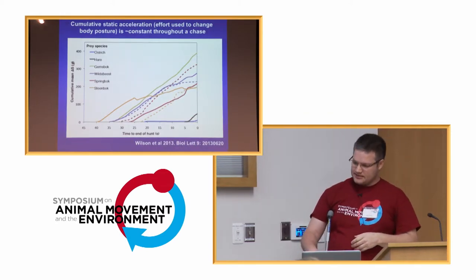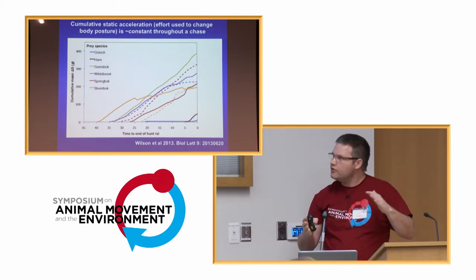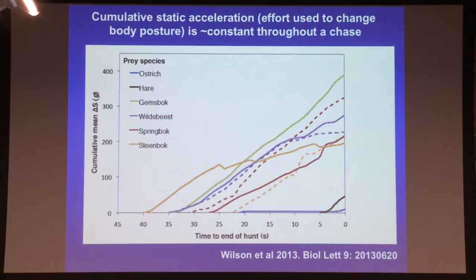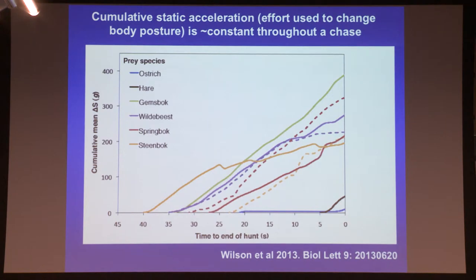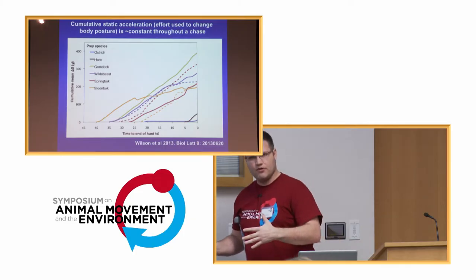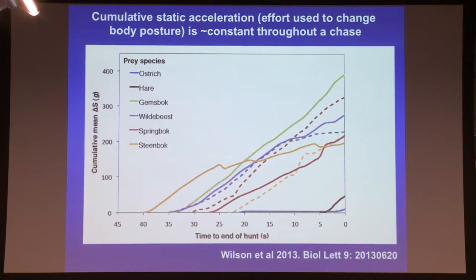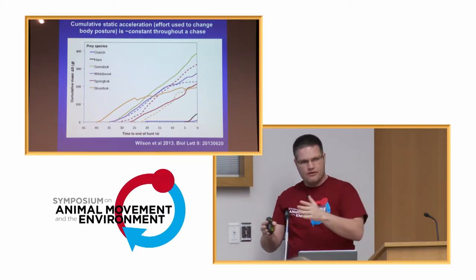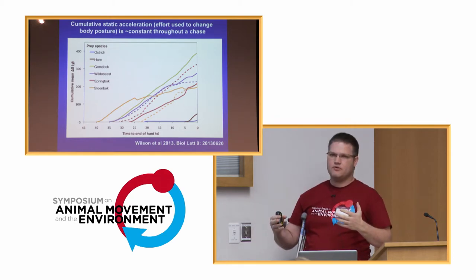What you can then do is take that static acceleration — where you can see body posture changes — and subtract the effect of G-force to get the effect of both lateral and forward acceleration on the animal. What you see is that during the entire hunt, this is a measure of the force or energy the animal expends, and it's pretty constant over time. What this is telling us is that while the animal spends energy going forward in the acceleration phase, and then switches to mirroring the prey's movements, the energy expended is basically the same.